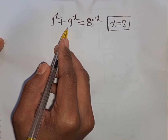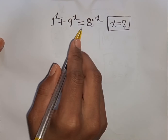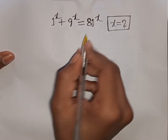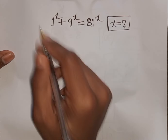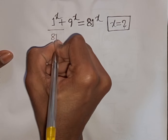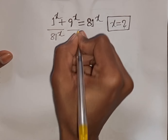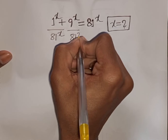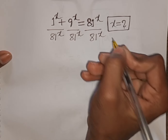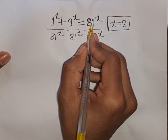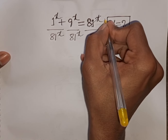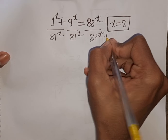1 power x plus 9 power x is equal to 81 power x. Find the value of x. First, we divide both sides by 81 power x. This term will be cancelled, leaving 1 here and 1 here on the right side.